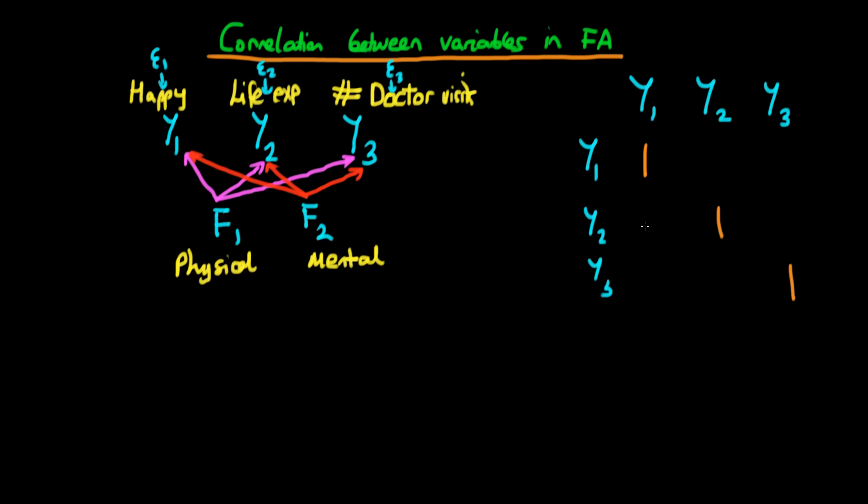We might have something like the correlation between y1 and y2 is equal to 0.4. Between y1 and y3, it might be 0.2, and then finally between y2 and y3, it might be 0.6. I don't need to specify any of the variables up in this upper triangle here because the covariance of y1 with y2 is exactly the same as it is between y2 and y1. These are just going to be a reflection of those which we see in the bottom triangle.